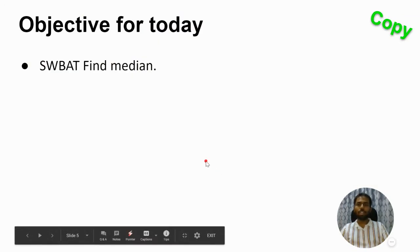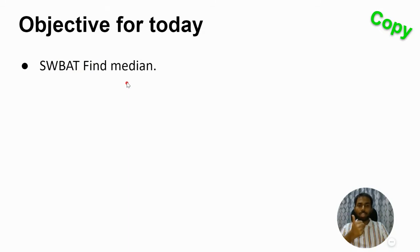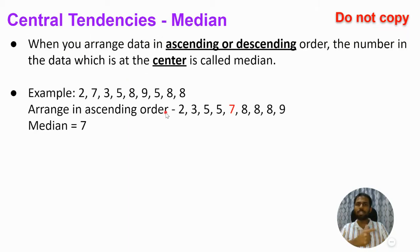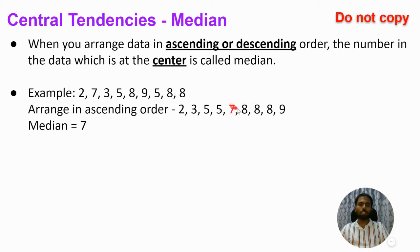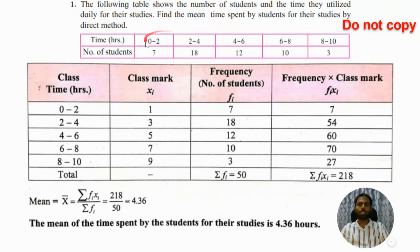Today's objective is: students will be able to find median. What is median? When you arrange data in ascending or descending order, the number in the data which is at the center is called median. For example, if you arrange this data in ascending order, the middle number has four numbers on its left side and four numbers on its right side — that center number is the median.